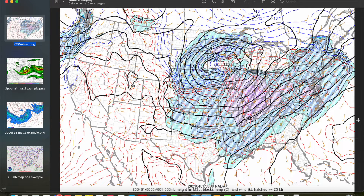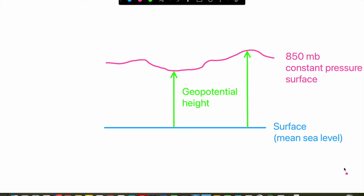At each mandatory level — 850 millibars, 500 millibars, 300 millibars, etc. — we're dealing with a constant pressure surface. Geopotential height is the height of that constant pressure surface above mean sea level. If we could physically see the 850 millibar surface looking straight on, the blue line would be mean sea level and the pink line would be our 850 millibar constant pressure surface. Geopotential height, denoted in green, changes based on variables like temperature, so that surface is not the same height everywhere. These variations manifest as troughs and ridges on upper air maps, and when meteorologists say height rises or height falls, they're referring to changes in geopotential height over time.